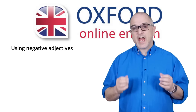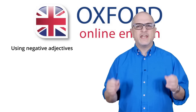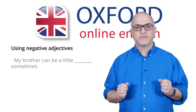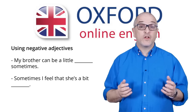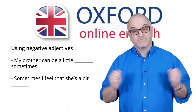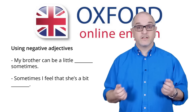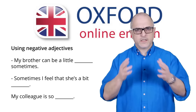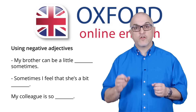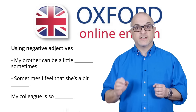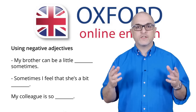You can see how we often use slightly more indirect language to talk about someone's negative characteristics: 'My brother can be a little… sometimes', 'Sometimes I feel that she's a bit…' Of course, if you really want to be direct, you can be: 'My colleague is so…' Now pause the video and try to use these words and phrases. Make two to three sentences and don't forget to add examples and details.